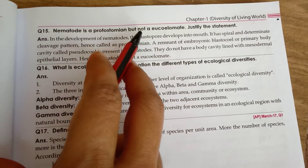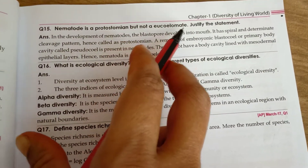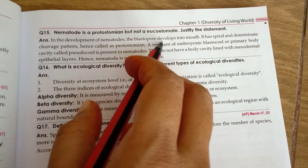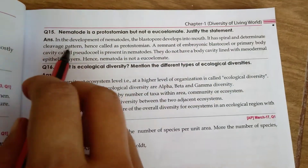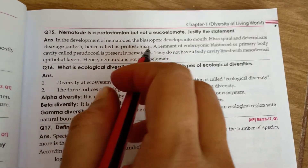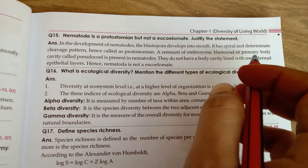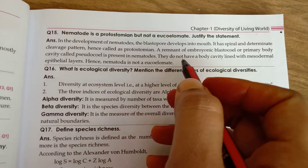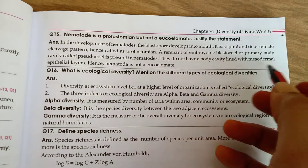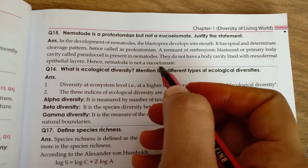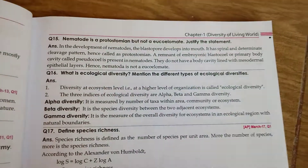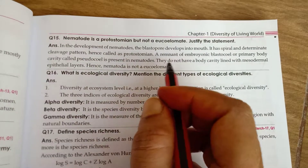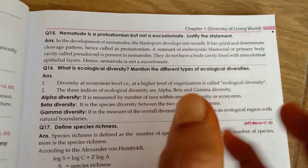Nematoda is a protostomian but not a true eucoelomate. In Nematoda, the blastopore develops into the mouth and it has spiral and determinate cleavage — hence called protostomian. However, the remnants of the embryonic blastocoel (primary body cavity) called pseudocoelom is present. They do not have a body cavity lined with mesodermal epithelium, hence Nematoda is a pseudocoelomate, not a true eucoelomate.